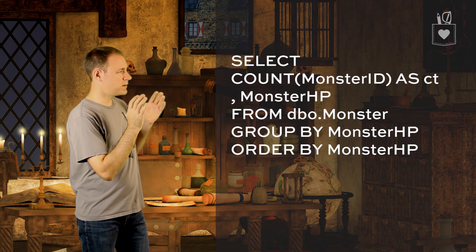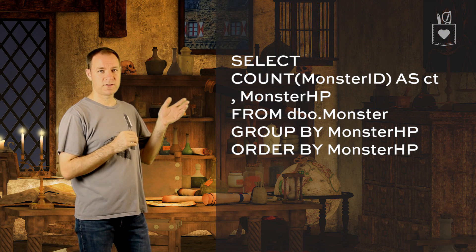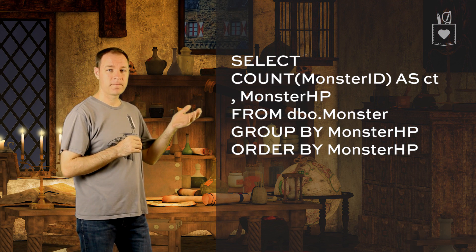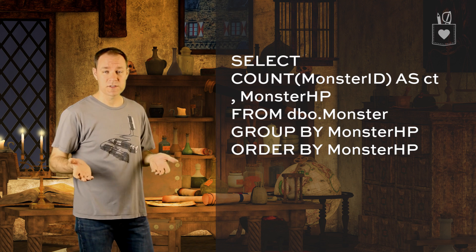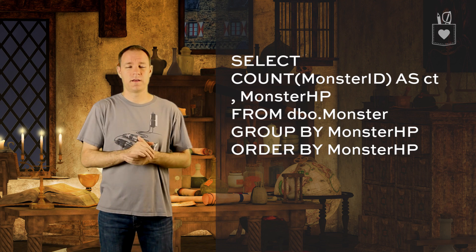Of all the uses we just covered, I want to focus on looking for gaps in numerical data. Say we want to report on all the monsters in our Crossbows and Cursors game grouped by how many hit points they have. We could select the count of monster ID and the monster HP from the monster table, group by and order by monster HP. Pretty simple query — it should give us what we want, but there's one little problem.